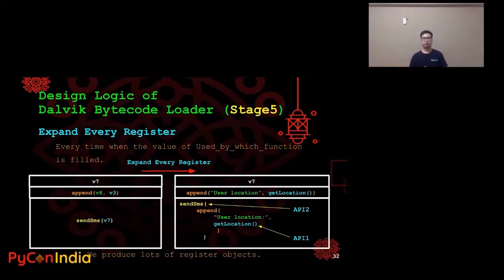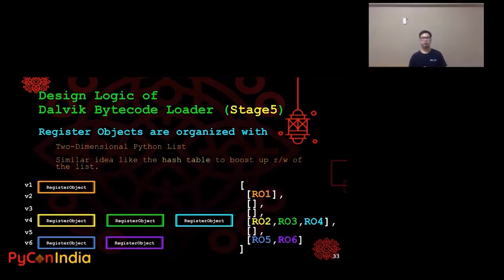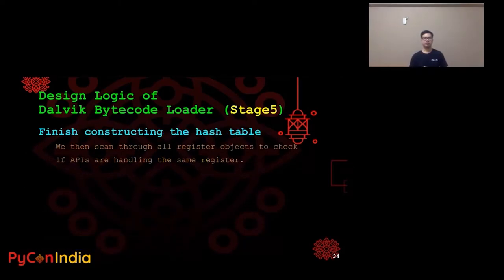After we scan through the source code, we produce lots of register objects. Those register objects are organized in a two-dimensional Python list — a similar idea to a hash table — which we use to boost the read and write speed of the list. For example, register V4 has three register objects, meaning in the source code scanned, V4 was used three times. Each time it was used, we store the present value of the register and the function that used it. Basically, the whole table is the history of each register. When we finish constructing the table, we scan through all register objects to check if the native APIs are handling the same register.